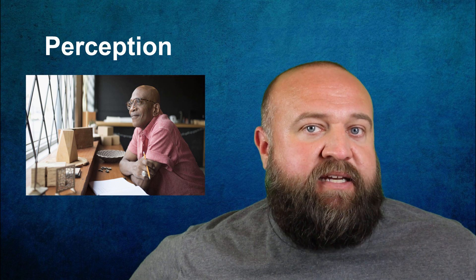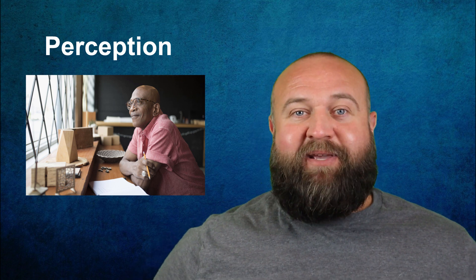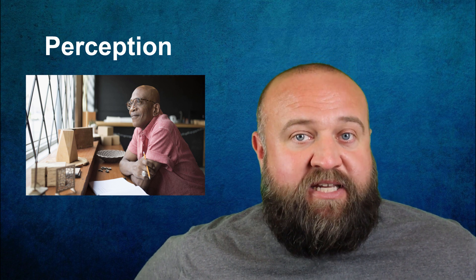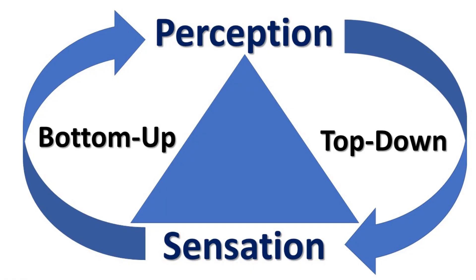Typically I like to think of sensation as being the cause and perception as being the effect — so basically we perceive what we sense, with sensation coming first. We refer to this as bottom-up processing, and I would say it probably explains most of the interactions between sensation and perception. However, it doesn't always happen this way — sometimes our perceptions come first.